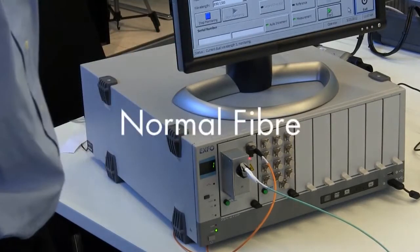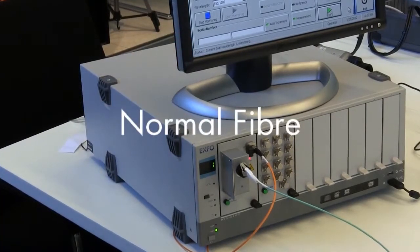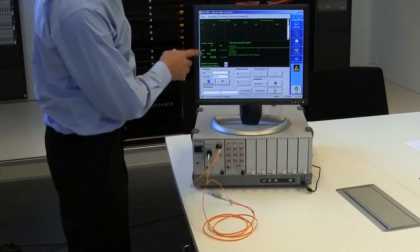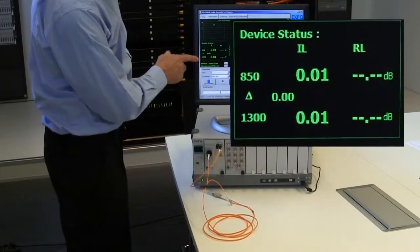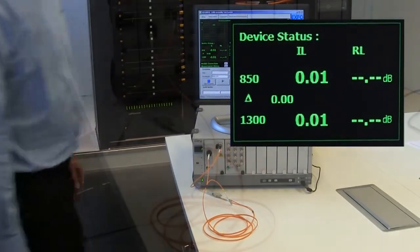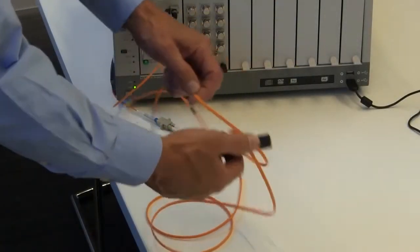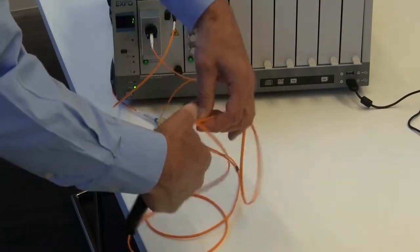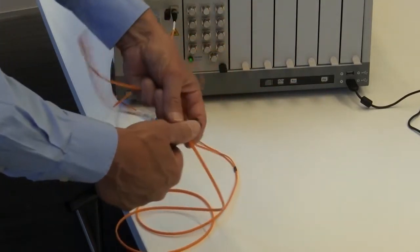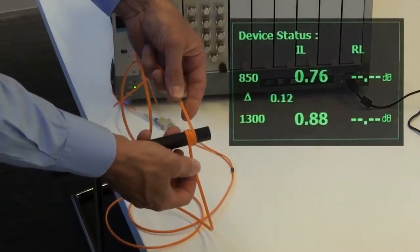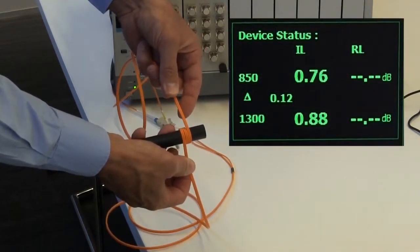First we do the test with a normal patch cord connected between the source and the integrating cavity. The reference test is done without any constraint on the fiber. We wrap the cord around the mandrel with a 15 mm diameter and you can see an insertion loss increase of 0.75 dB at 850 nm.